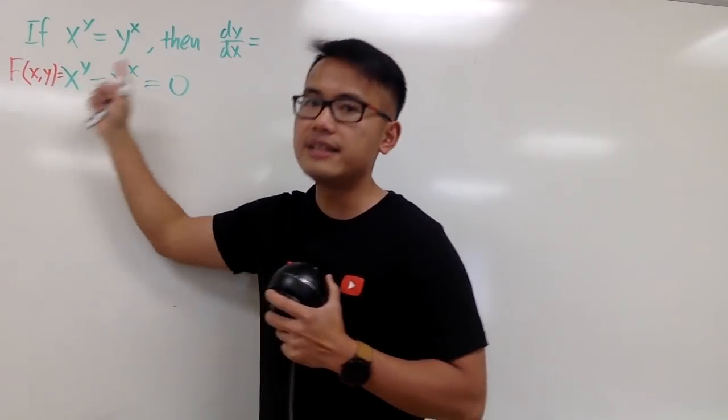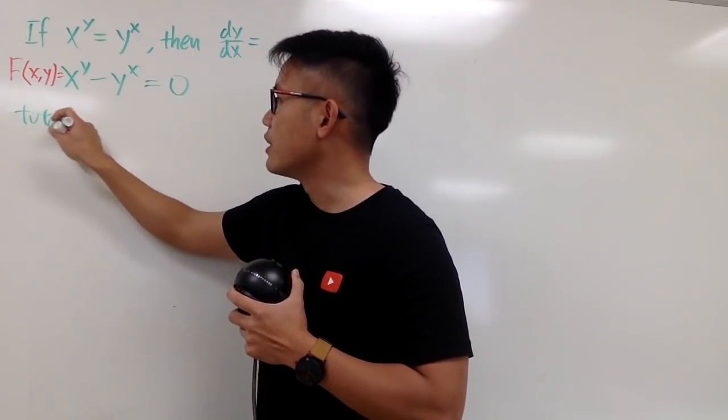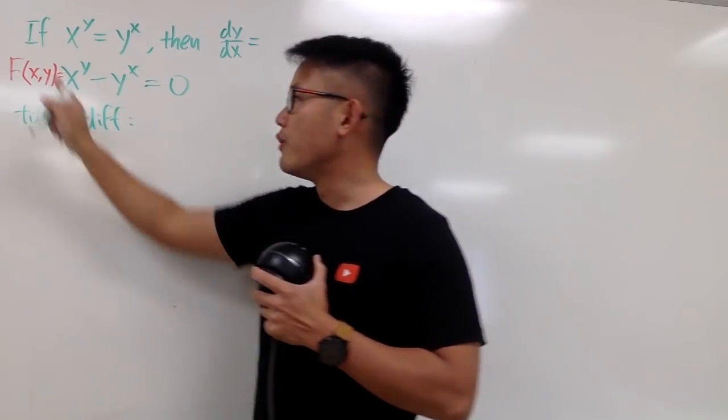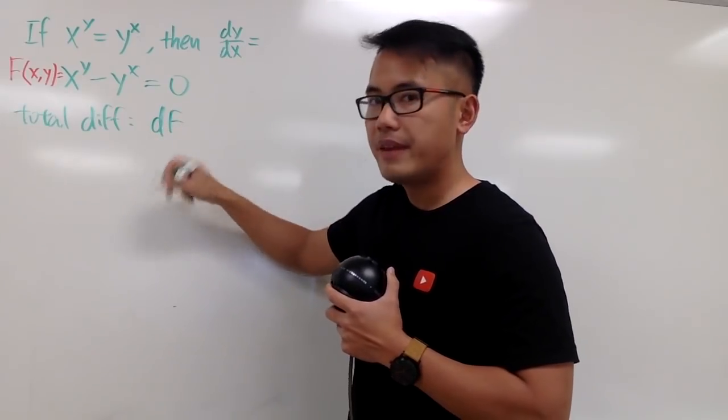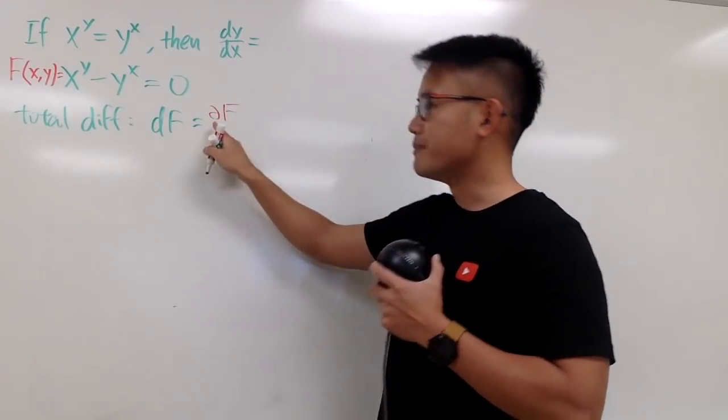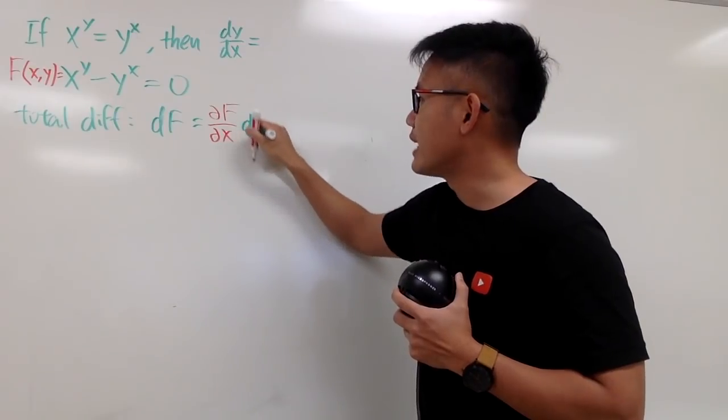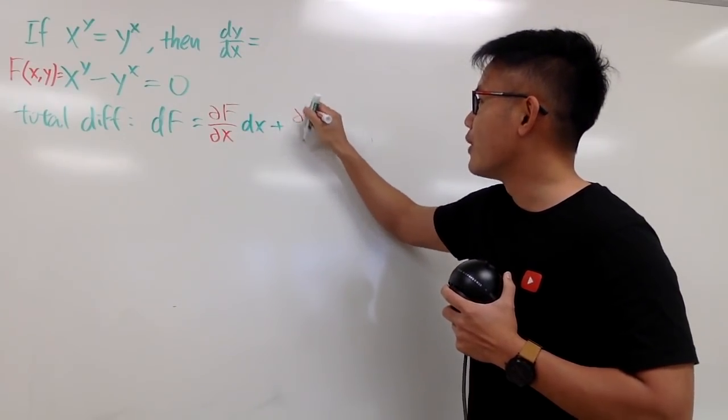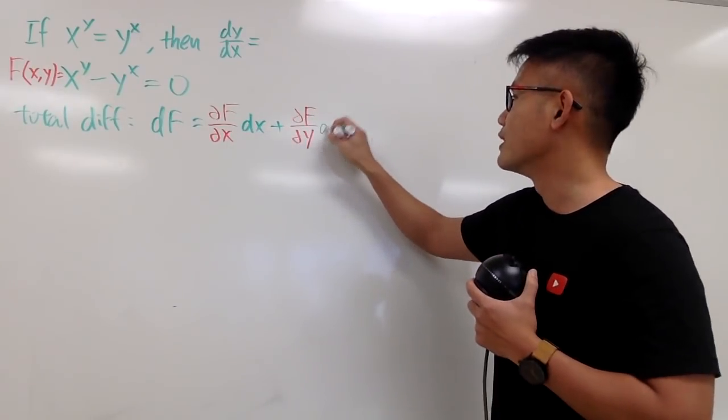Now, we are going to differentiate capital F, and that's called the total differential. Let me write this down right here for you guys as well. Total differential for this right here is denoted by df, and this is equal to the partial of capital F with respect to x, and then you attach the dx to it, and then you add the partial of capital F with respect to y, and take a guess what's next. Of course, dy.